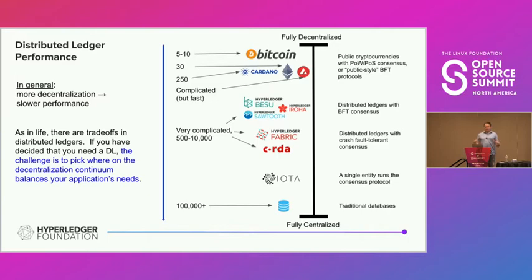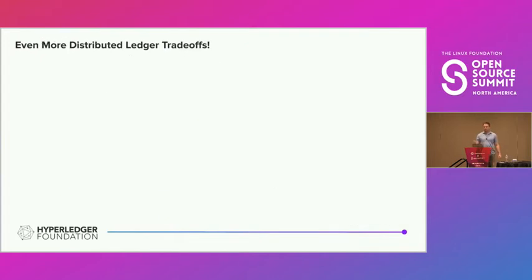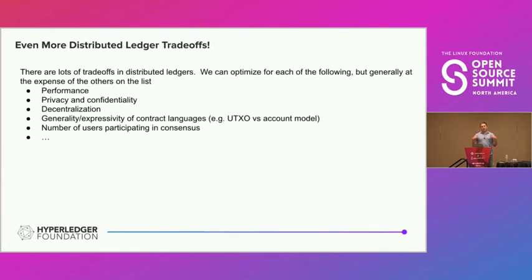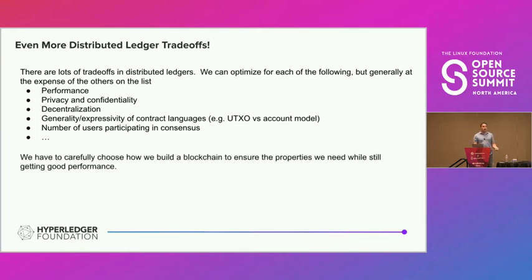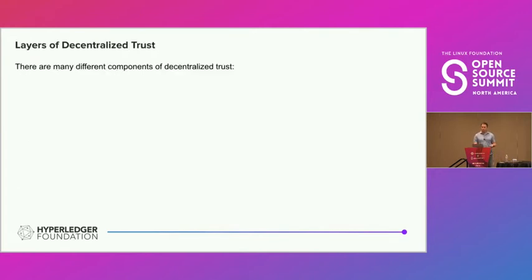There are trade-offs in distributed ledgers. If you've decided you need one, it's important to pick where on the decentralization continuum you need to be — how much decentralization you need, and not any more, because otherwise you're paying for it in performance. The main and most universal trade-off is decentralization versus performance.